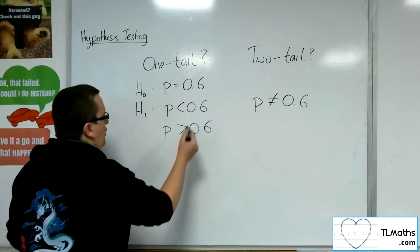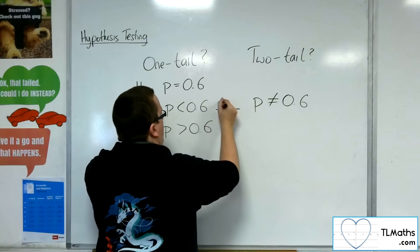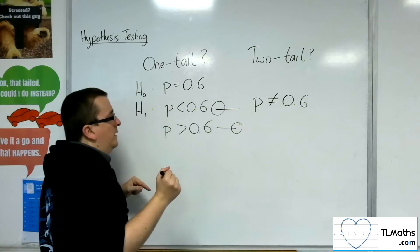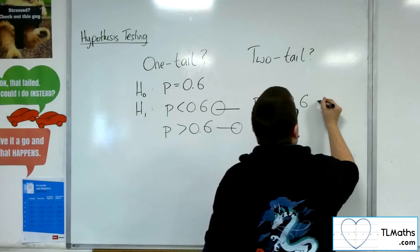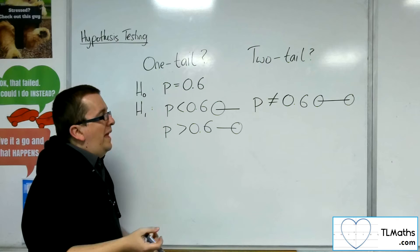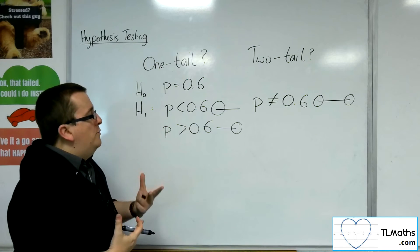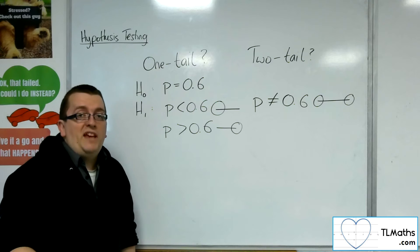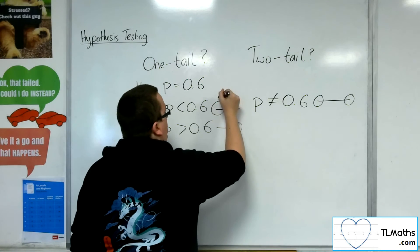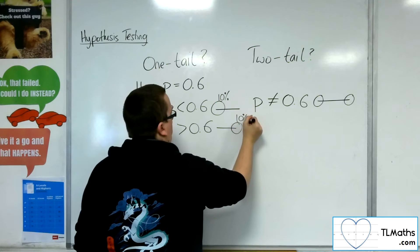Because instead of just looking at, in this case, the lower end, or in this case, the upper end, we must instead look at both tails. And that region that I'm looking for, maybe if we were doing a, let's say we were doing a 10% significance level, then we would be looking at the 10% at the bottom, or the 10% at the top.